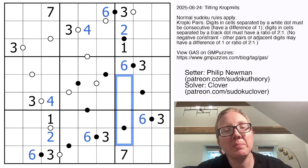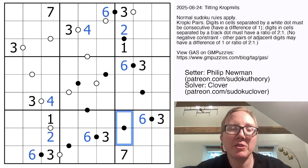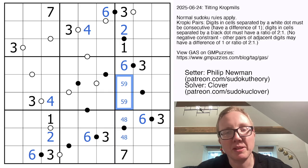The next thing that catches my eye is this column. There is only one pair of digits remaining that have a 1 to 2 relationship, and that's 4 and 8, placing 5 and 9 here and here to finish the column.